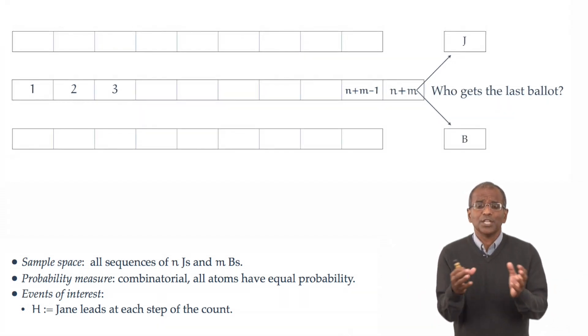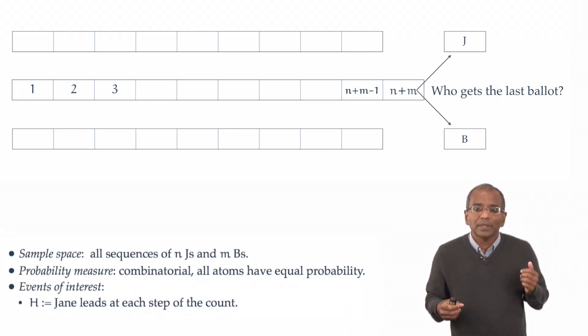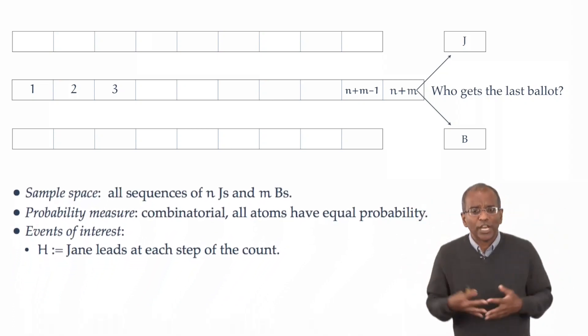Now, this is suggested. You see, the last ballot has to go to one of two people, Jane or Bob. We now have a way of partitioning the space using an ancillary event, the event as to what happens to the last ballot.